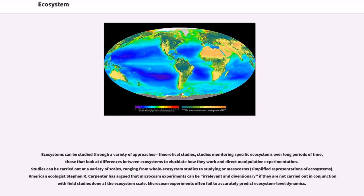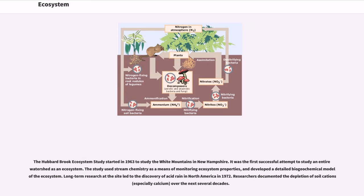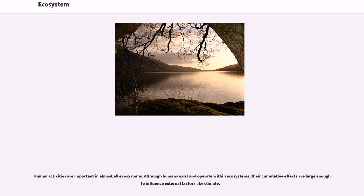Microcosm experiments often fail to accurately predict ecosystem level dynamics. The Hubbard Brook Ecosystem study started in 1963 to study the White Mountains in New Hampshire—it was the first successful attempt to study an entire watershed as an ecosystem. The study used stream chemistry to monitor ecosystem properties and developed a detailed biogeochemical model. Long-term research led to the discovery of acid rain in North America in 1972, and researchers documented the depletion of soil cations, especially calcium, over the next several decades. Human activities are important in almost all ecosystems.